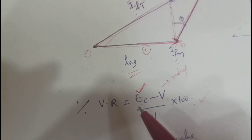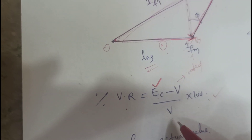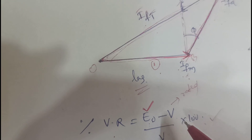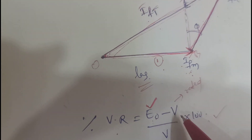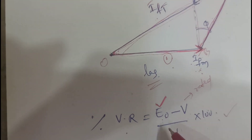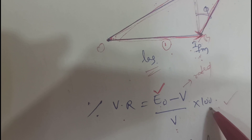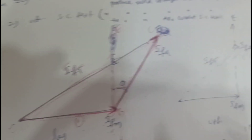Finally, this is the formula for voltage regulation: (E0 − V) / V × 100. E0 is obtained from the graph, and V is the rated voltage. This gives the voltage regulation.